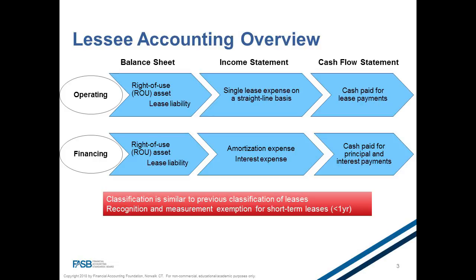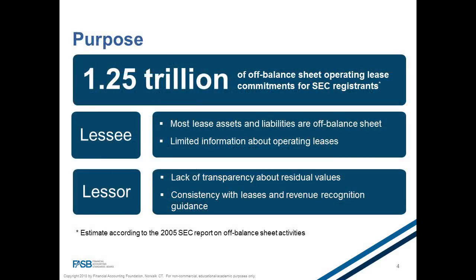Why did the board take on this project? When the board was conducting research for this standard, we learned that many financial statement users were already making adjustments to better capture an estimated $1.25 trillion in off-balance sheet assets and liabilities resulting from leasing obligations. Often, they roughly estimated by multiplying a seven or some other multiple to rent expense to calculate operating assets and liabilities. Those amounts were then used in metrics such as return on assets, return on capital employed, or leverage. The board believed these represented true assets and obligations that should be reflected on financial statements, and that users needed better information about leases, including the terms and amounts.